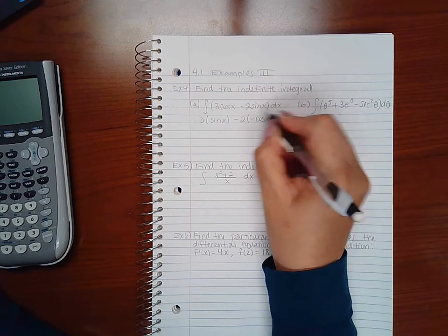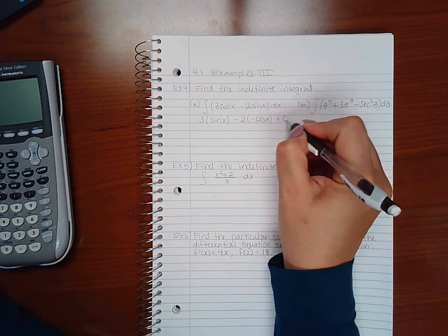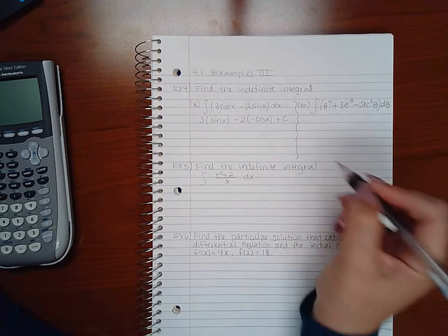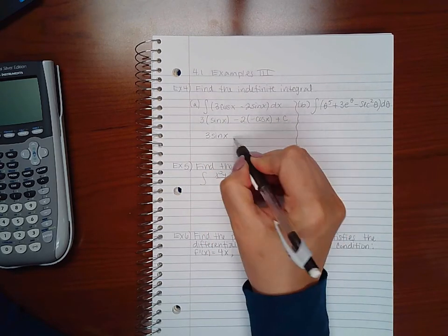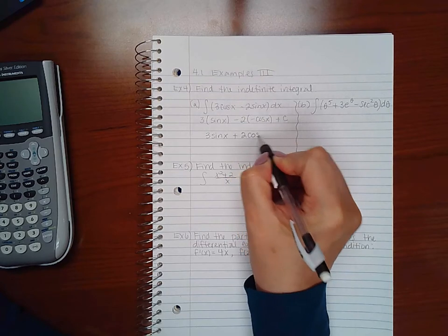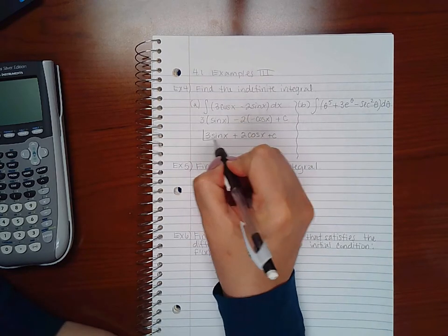Because I've taken the antiderivative of each term, I do have to put the constant of integration. So if I multiply my coefficients in, I end up with positive two cosine x plus c, and that is the integral of part a.